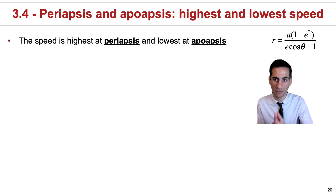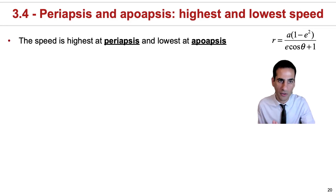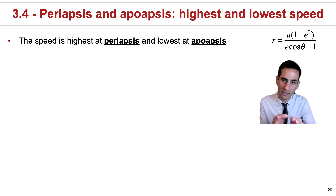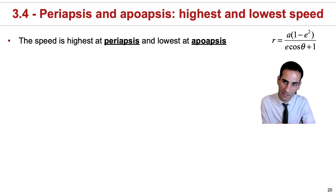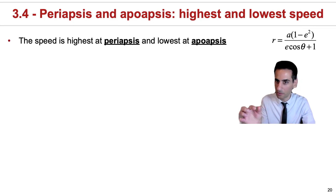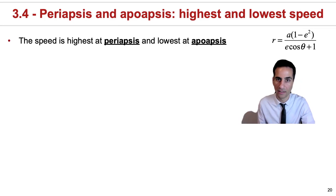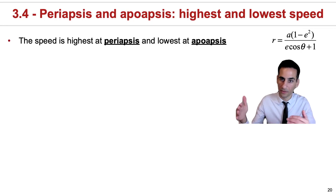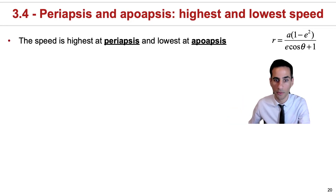We're going to have a look very quickly at how you derive expressions to get essentially the location of what we call the periapsis — the closest point from an object to where it's orbiting — and the apoapsis, which is the furthest point in an orbit.